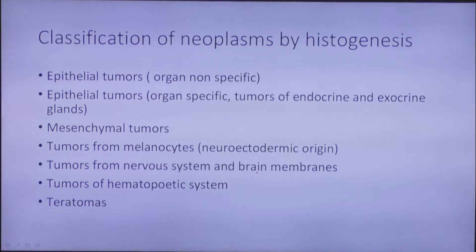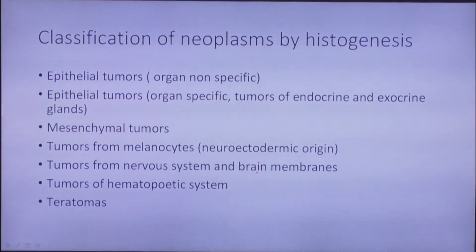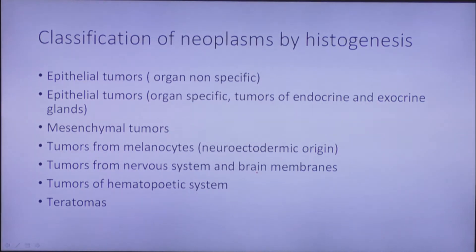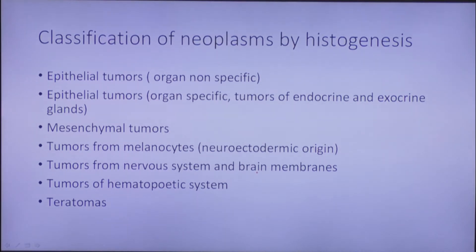Here is a presentation of the general classification of neoplasms by histogenesis, which includes epithelial tumors, mesenchymal tumors, tumors from melanocytes (which are of neuroectodermic origin), tumors from the nervous system and brain membranes, tumors of the hematopoietic system, and teratomas.